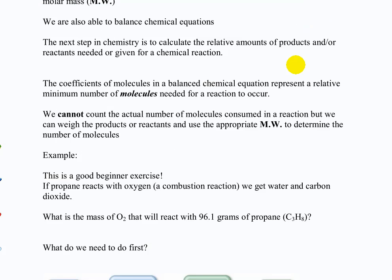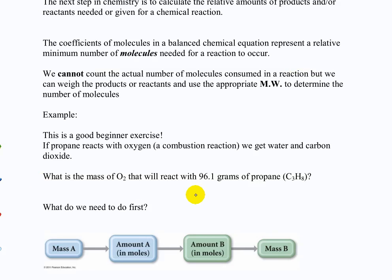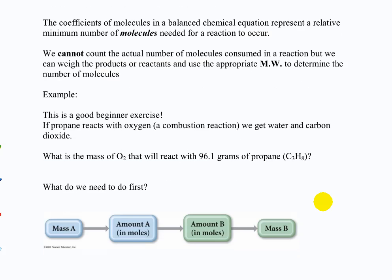So now let's look back at this other equation. Here are the types of questions we're going to be answering. What is the mass of oxygen that will react with 96.1 grams of propane in a combustion reaction? So first we need the equation. Write the balanced equation for this process: propane reacts with oxygen, producing water and carbon dioxide.